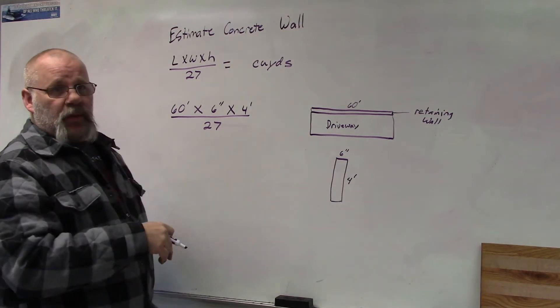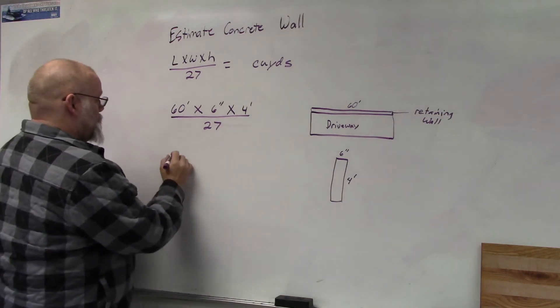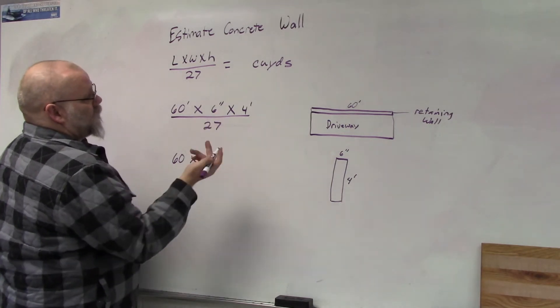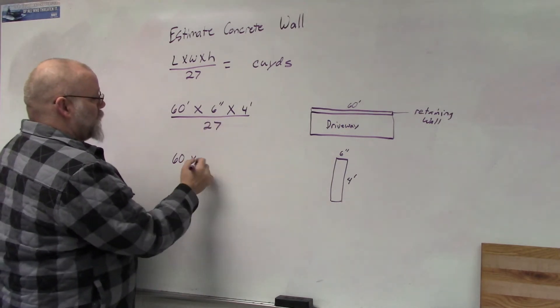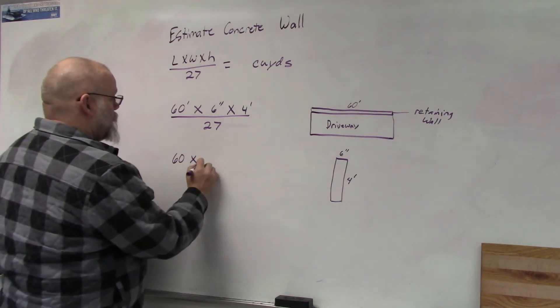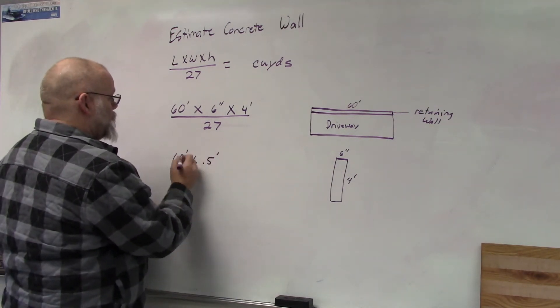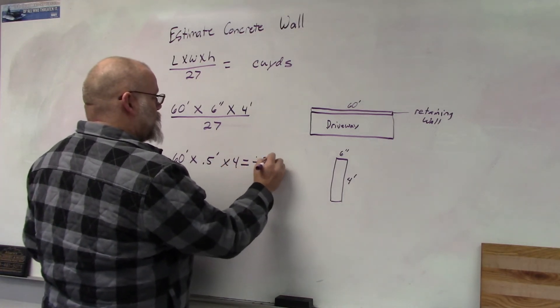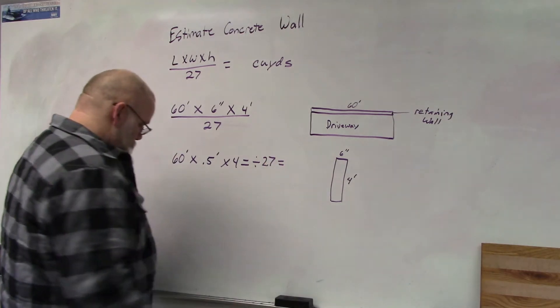Okay, now what we're going to do is put it in the calculator as 60 times 6. We can put it in as 6 over 12, or 6 inches is half of a foot which is 0.5 feet, times 4 equals divided by 27 equals.